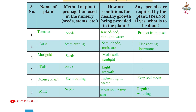Page 10, Table 1.1 — information for developing the plant nursery. First plant: tomato. Method of propagation: seeds. Conditions provided: raised bed, sunlight, water. Special care: protect from pests. Second plant: rose. Method of propagation: stem cutting. Conditions provided: semi-shade, moisture. Special care: use rooting hormone.